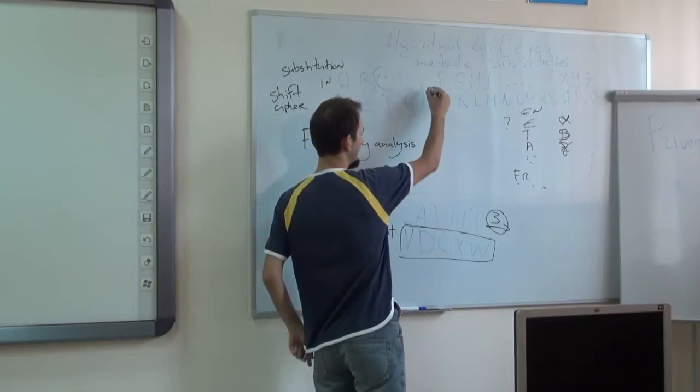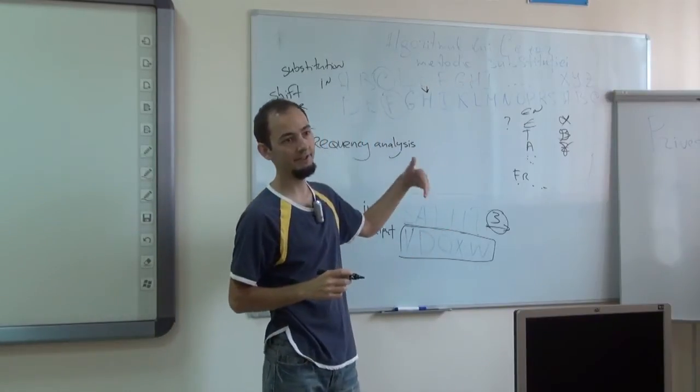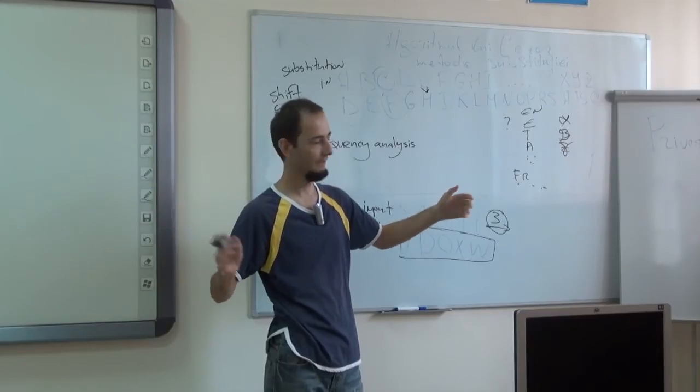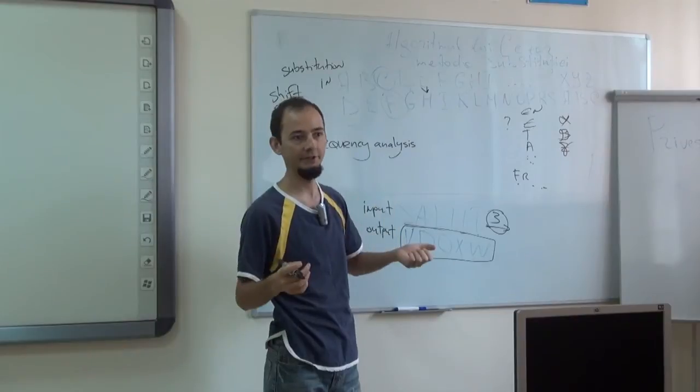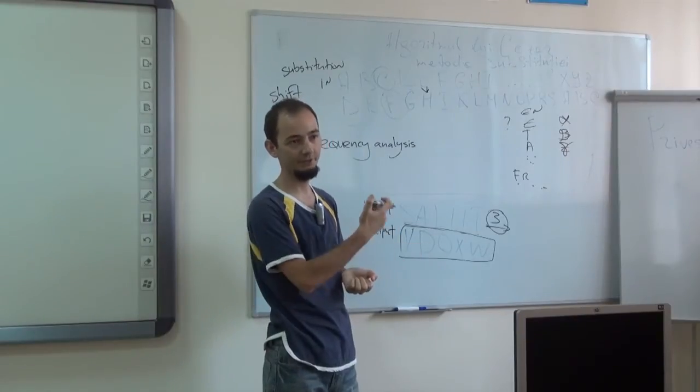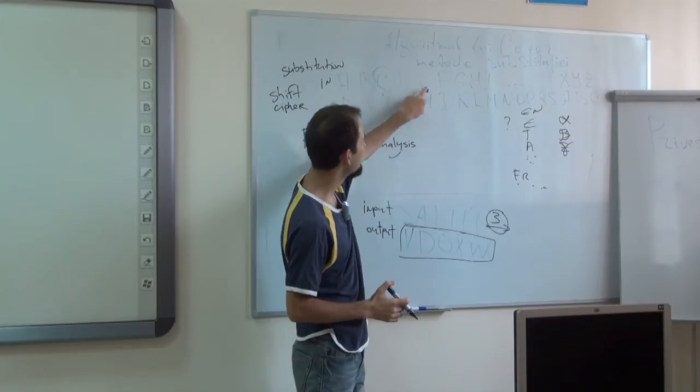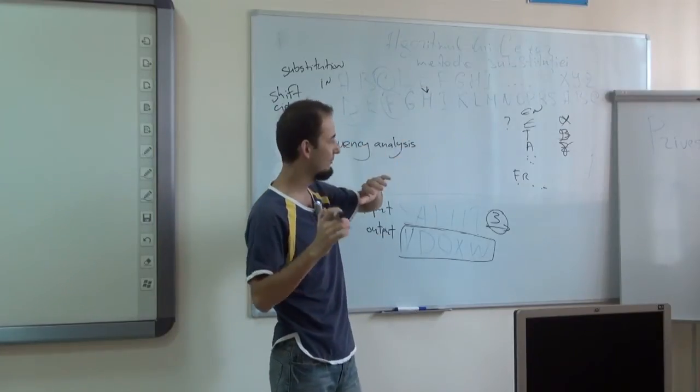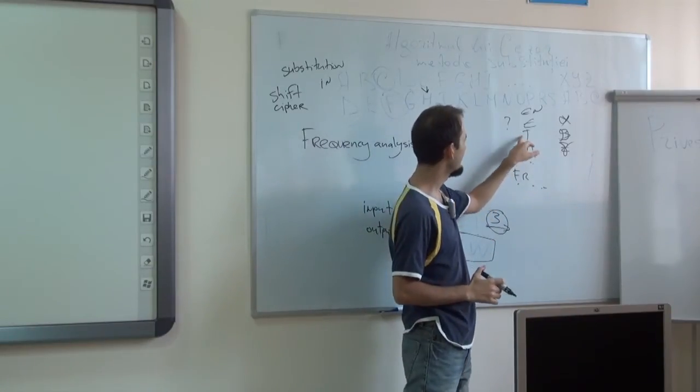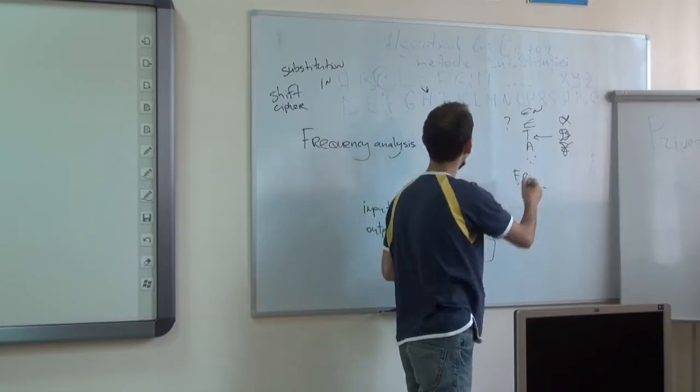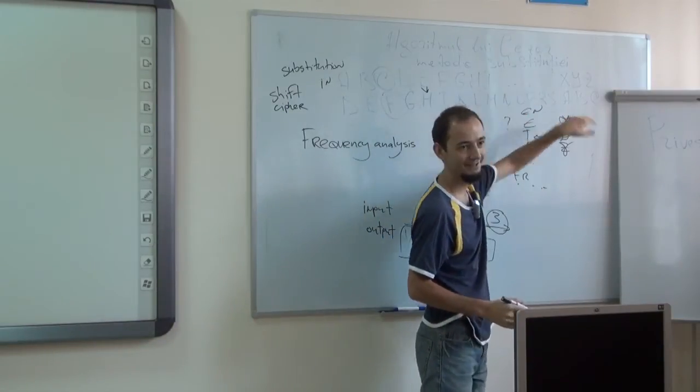So let's take this example that was already there. E is mapped to H. So if this piece of text is in English, and you run a statistical analysis on it, you will see that H is the most commonly used letter. Knowing that this text is in English, you can say, uh-huh, then E was mapped to H. You can then double-check that by looking for the second most common character, which should be mapped to T. Here, in this gap.